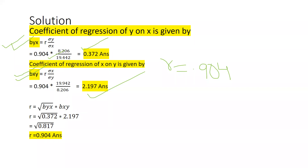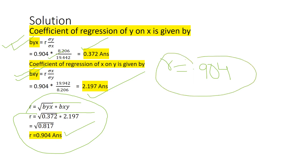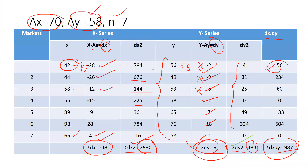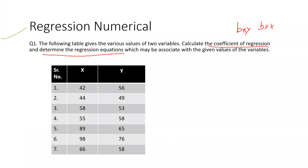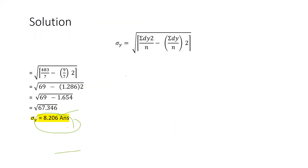We can cross-check whether these values are correct. The formula is r = square root of (byx × bxy). Putting in byx and bxy, we get back the same answer as obtained through Carl Pearson correlation, confirming our results. Now the next part of the question: determine the regression equations.